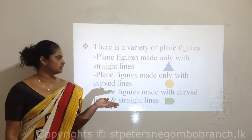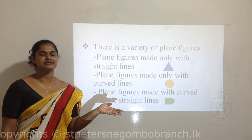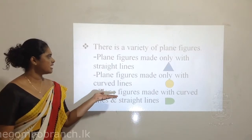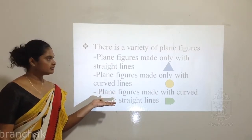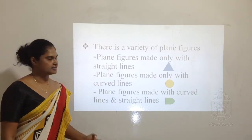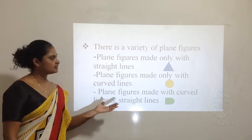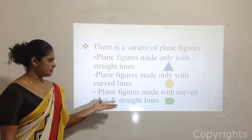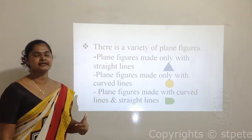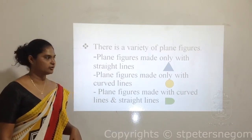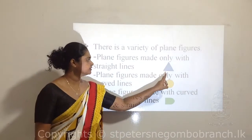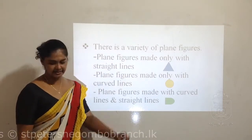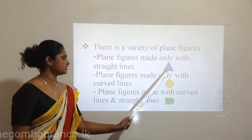Now we are going to learn how plane figures are formed. Some plane figures are made with straight lines only, some are made with curved lines only, and some are made with straight lines and curved lines. Now look here - you are all aware about this figure. This is a triangle - this is a closed plane figure.